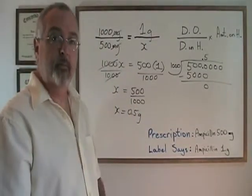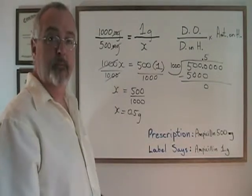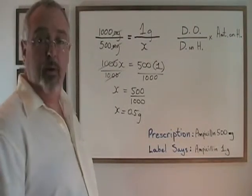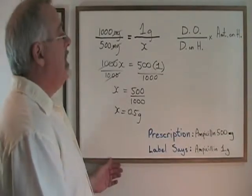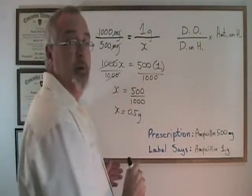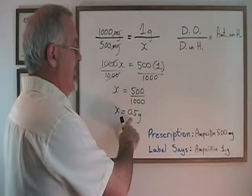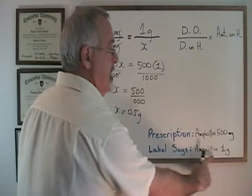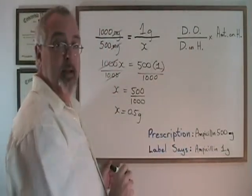Now I'm going to make room and then I will calculate my dosage. Now it's time to calculate our dose. We have the formula dose ordered, that's the amount that we just calculated, over dose on hand, that's what it says on our label, times amount on hand.